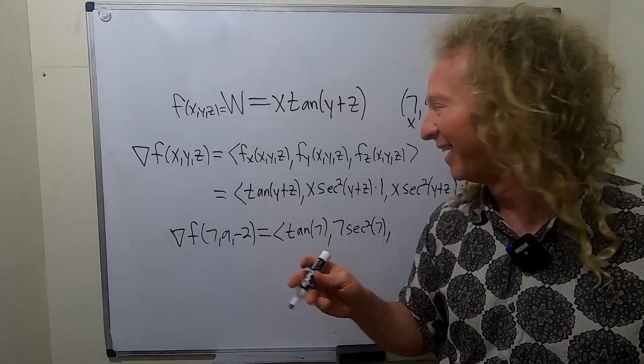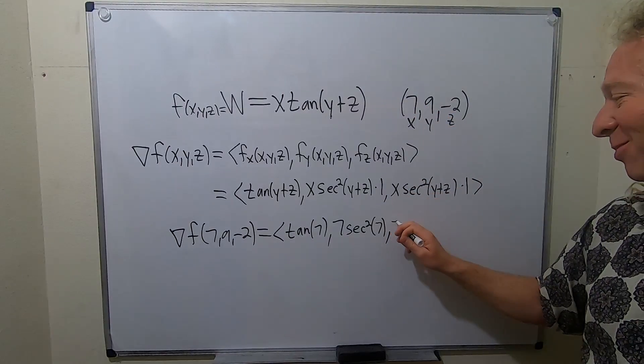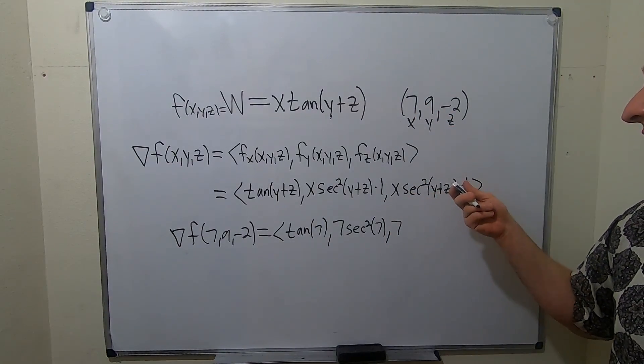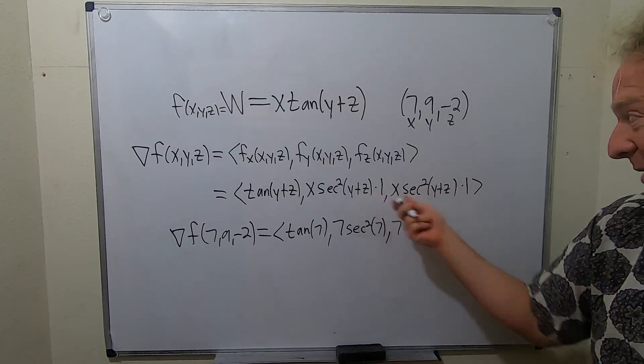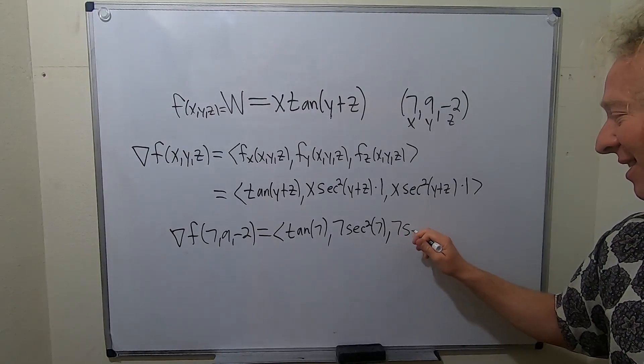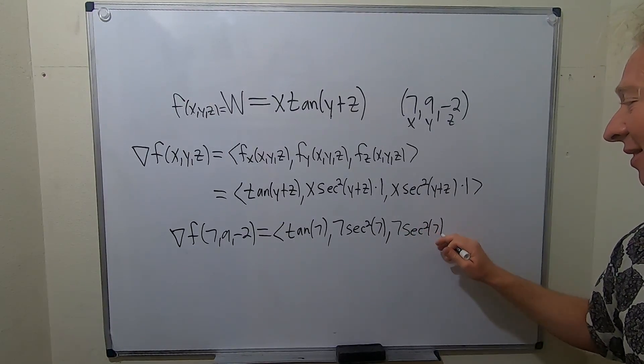They say 7s are lucky, right? And then 7, that's pretty cool. I haven't done this problem, so this is kind of exciting. Same thing. Oh my god, what's the same thing? It's the same thing. This is a secant squared of 7. Good stuff.